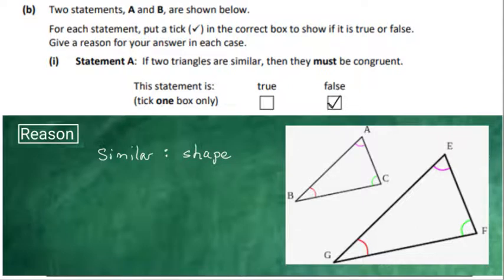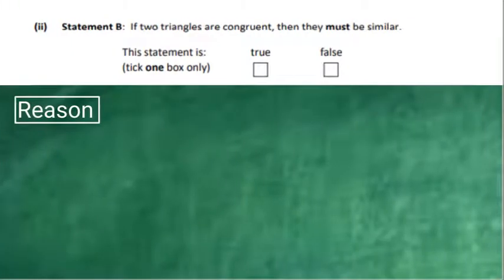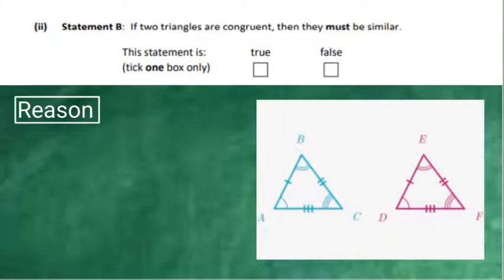If they're similar, then being congruent is not a must. Let's look at part B. If two triangles are congruent, they must be similar. Well, this is the converse argument.